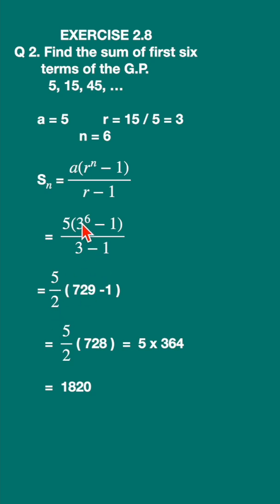And 3 raised to 6 is 729 minus 1, that is 728. 5 into 728 divided by 2 will give you 1820.